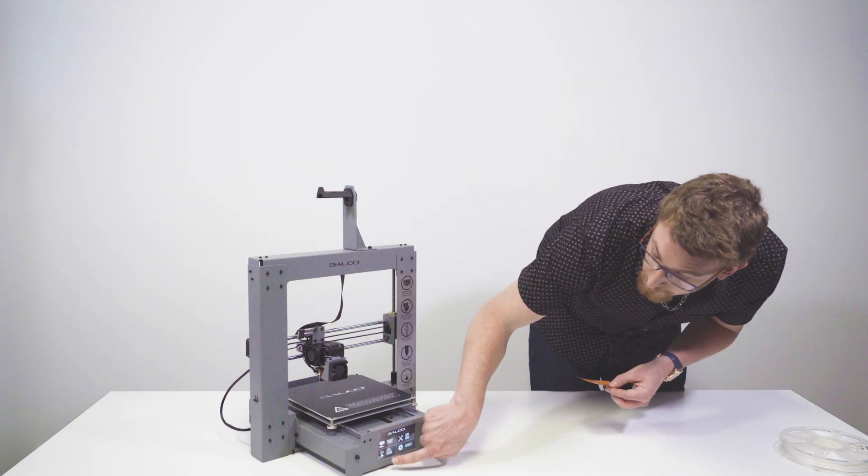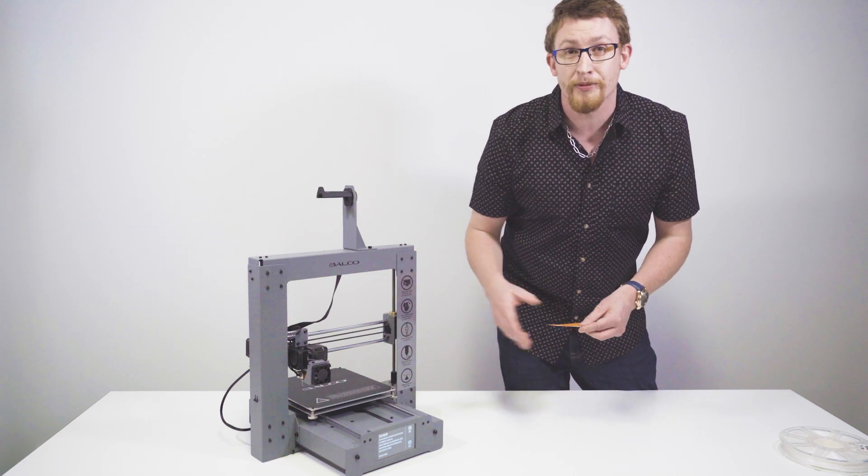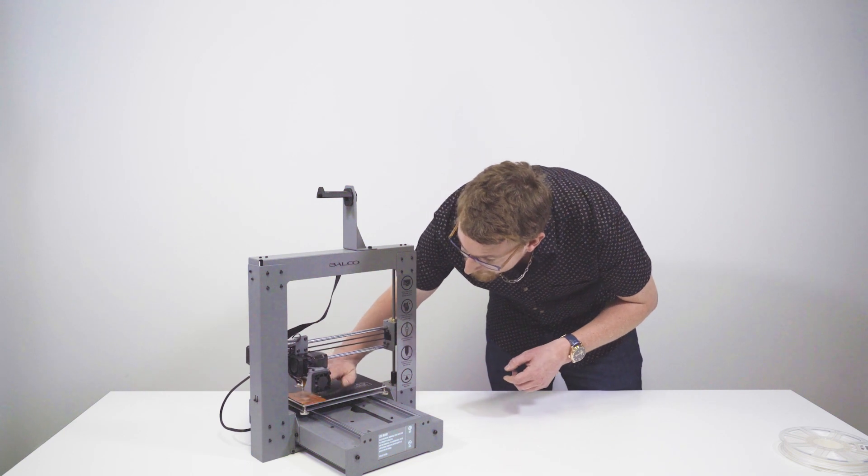What we're going to want to do is go into the level wizard here. It's going to give you a little introduction, just follow those simple steps. Using your card, once it hits every corner, place that card on the bed like so.